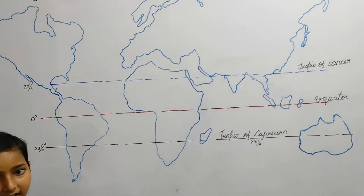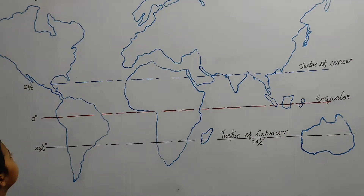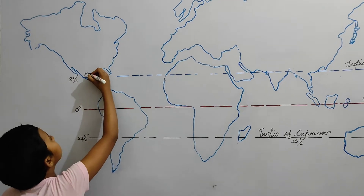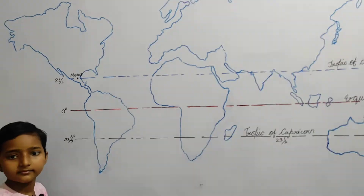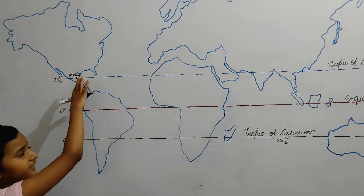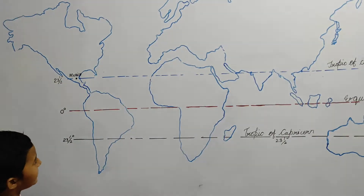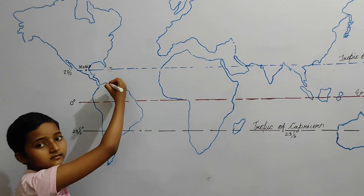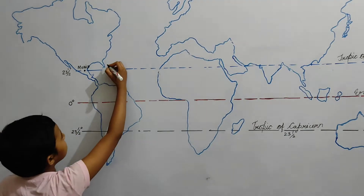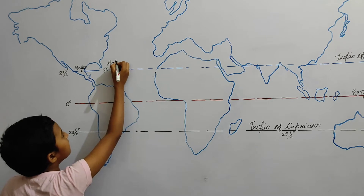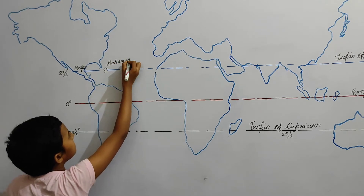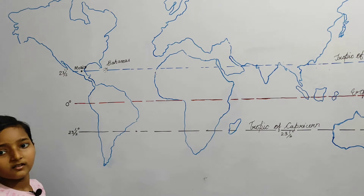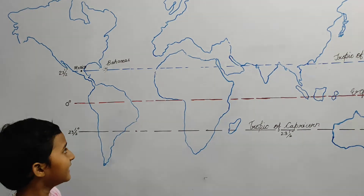In North America, the first country on the Tropic of Cancer is Mexico. The second country is Bahamas — you can see this is Bahamas. Now we have completed North America and we are coming to Africa.